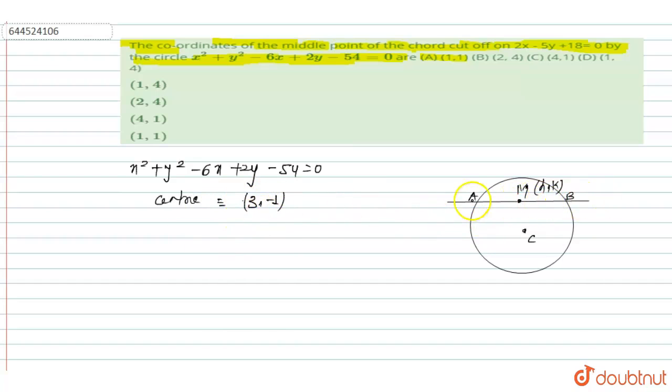Since M is lying on the line AB, then coordinate of M is h, k. The equation of line is 2x minus 5y plus 18 equals 0.